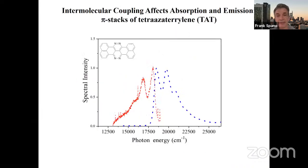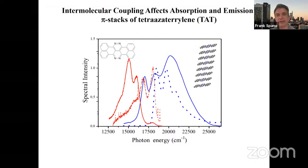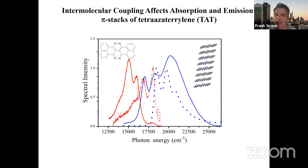If you look at the solution spectra of this TAT molecule, you see your well-structured, beautiful vibronic absorption spectrum and emission spectrum — almost textbook mirror-image symmetry. Then when you construct these pillars, you see a very dramatic change in both of those observables. We're going to focus almost entirely on the absorption spectrum because you see a strong red shift and a strong blue shift — it's almost like expanding in both directions. You might get a sense for H and J just by appreciating that, but we're going to quantify it much more.